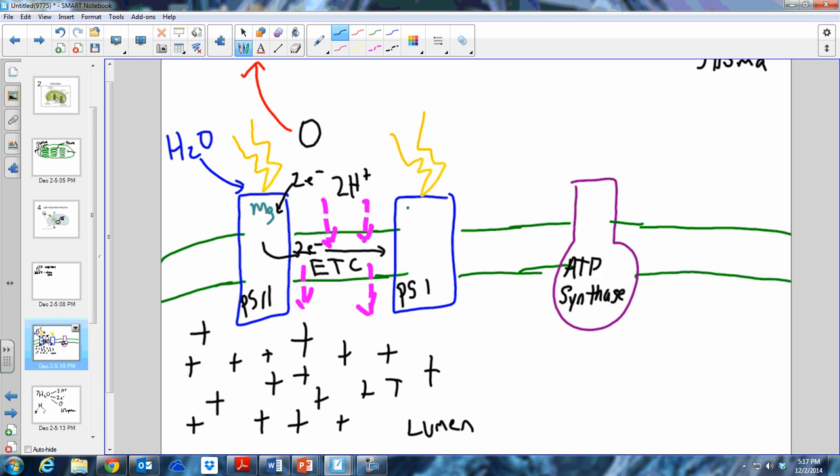Those electrons that are passing through the electron transport chain lose energy as they pass from one protein to the next, so they need to be recharged. At photosystem one, they are going to be recharged by the light that is also striking photosystem one. We have NADP+ coming from the Calvin cycle. It's going to scoop up those two electrons and turn to NADPH, and it is headed off to the Calvin cycle.